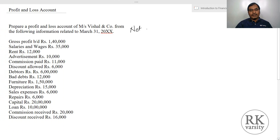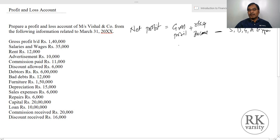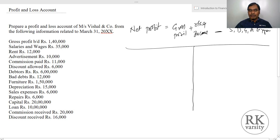Using a profit and loss account we will be able to calculate the net profit. Net profit equals gross profit plus other income, minus your selling, distribution, general and administrative expenses. We'll have a format for this — let us say we have to calculate a profit and loss account.